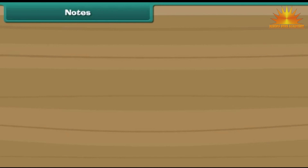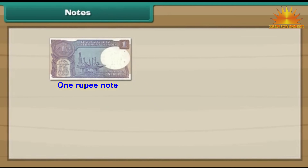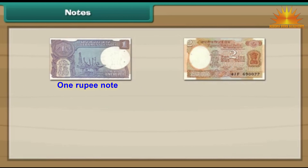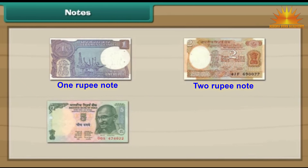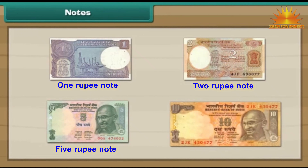Now let us look at the notes. This is a 1 rupee note. This is a 2 rupee note. This is a 5 rupee note. This is a 10 rupee note. Let us now look at the different combinations of notes.